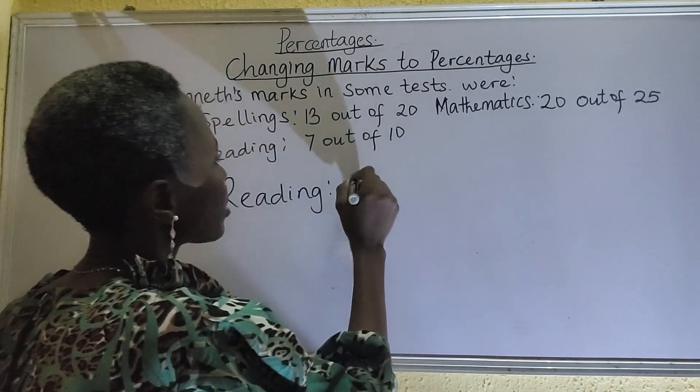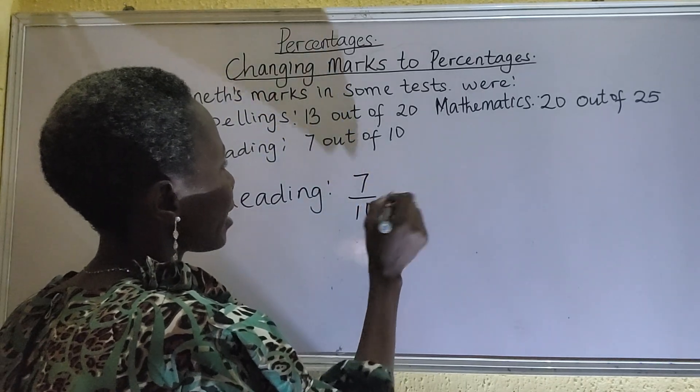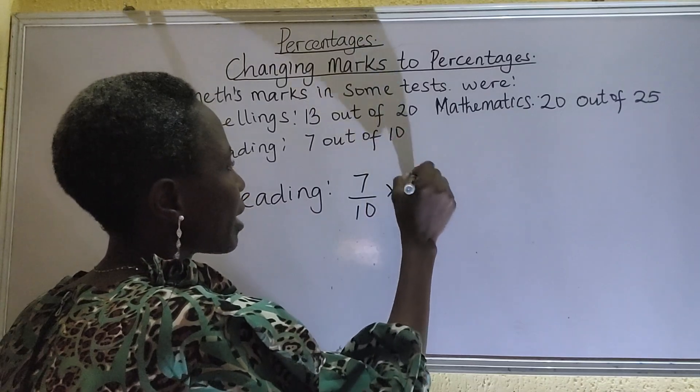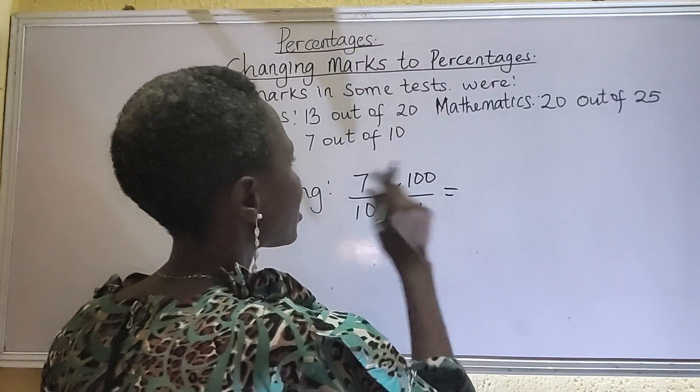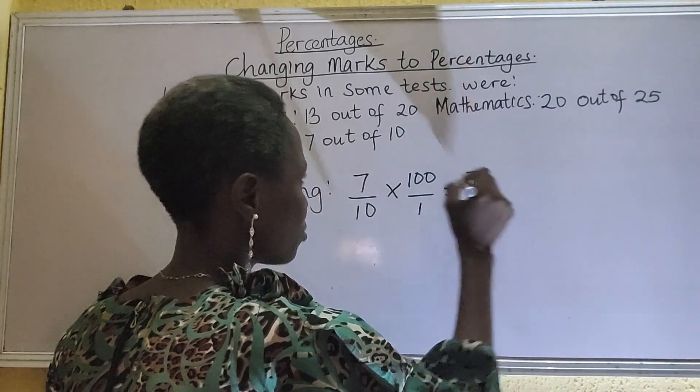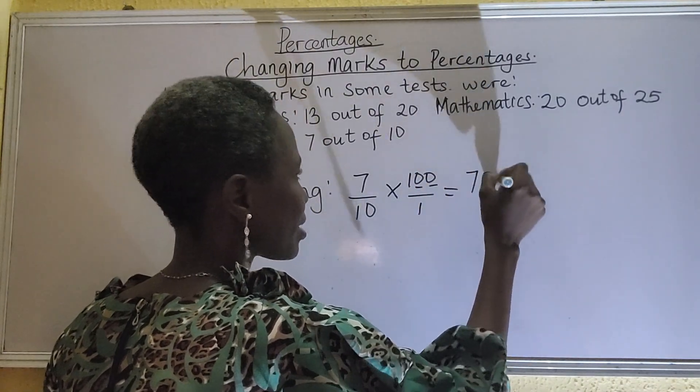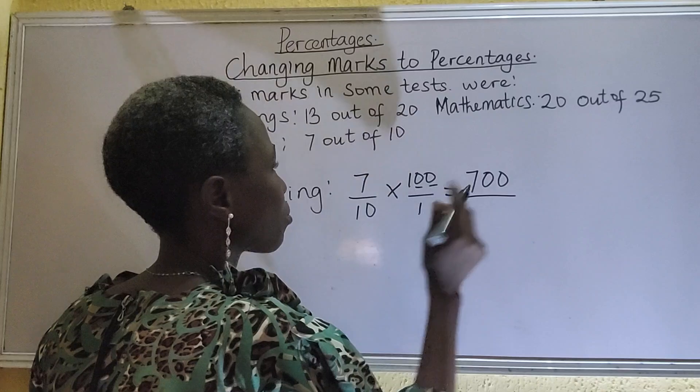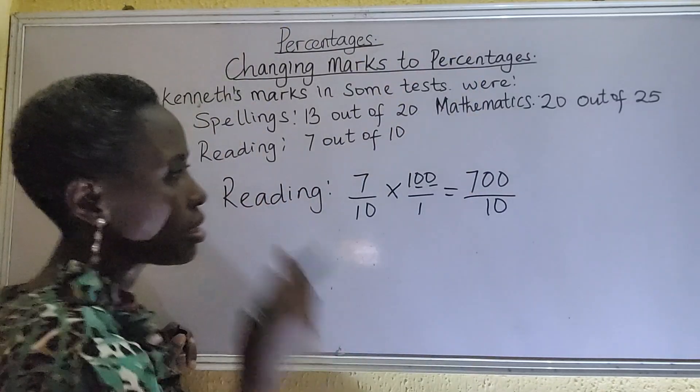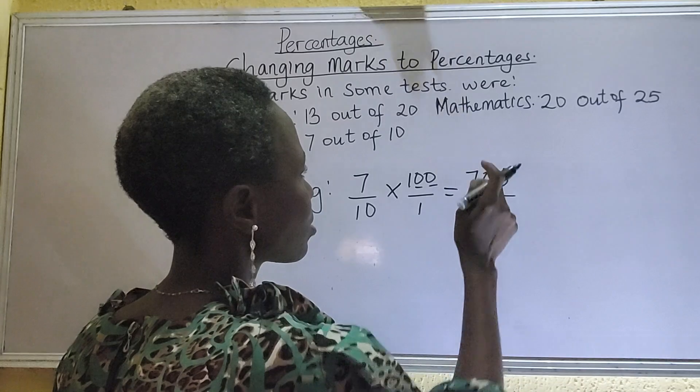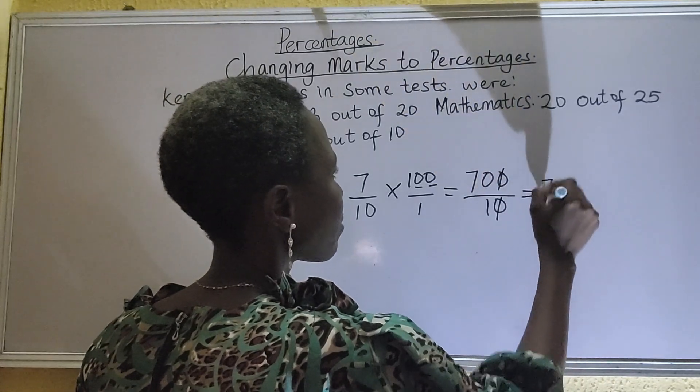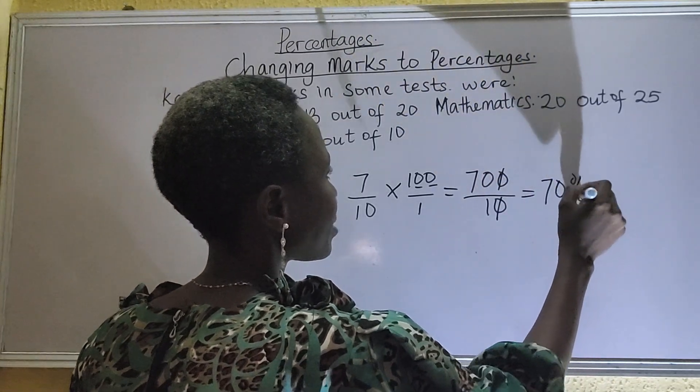Reading. Kenneth got 7 out of 10 multiplied by 100 over 1. So 7 times 100, 7, 1, 2, that's 700. Then 10 times 1, that's 10. Then we can divide. Zero can actually cancel zero. 70 over 1, that's 70%.